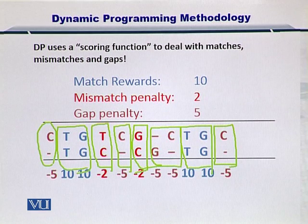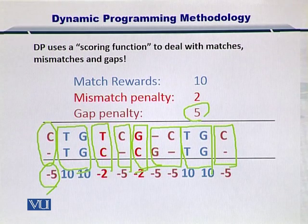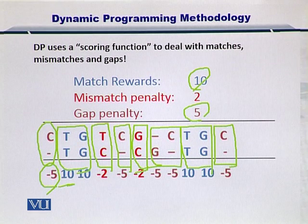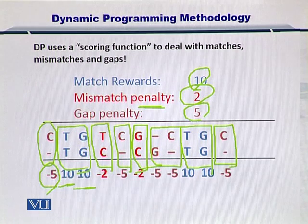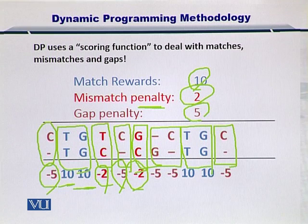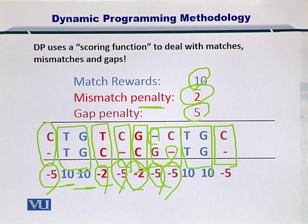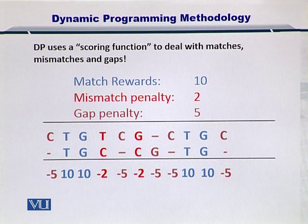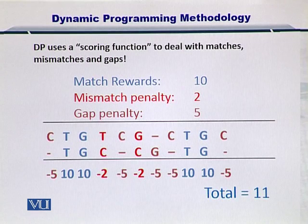Let's score those elements. The first gap penalty is minus 5, since C has no corresponding nucleotide. T matches T, so plus 10; G matches G, plus 10. T does not match C, so minus 2. C has a gap, so minus 5. G does not match C, so minus 2. Then there are two more gaps, two matches, and one more gap, which I've scored accordingly to compute the overall alignment score.